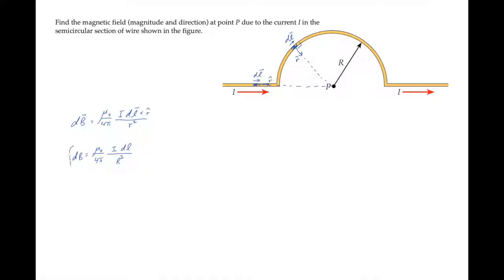We can integrate this on the left from 0 to the total magnetic field, and on the right from the beginning of the semicircular arc to the end of it, which is half the circumference of a circle.